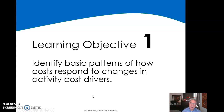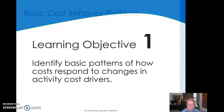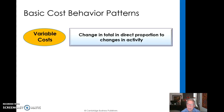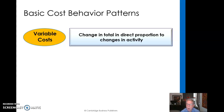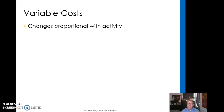First let's take a look at patterns of how costs respond to what we call activity cost drivers. We have variable costs. Here I have this bottle of water — if I make the raw materials that go into one bottle of water, if I make two bottles of water, it's twice as much. So those costs are going to vary directly with the number of water bottles that I make. I need so much plastic, so much water, so many labels, so many shipping containers, etc. They're going to change in proportion with activity, so if we don't have any activity, we don't have any costs when we have variable costs.